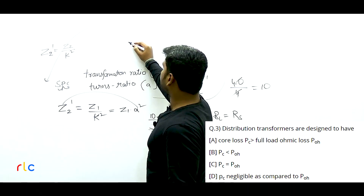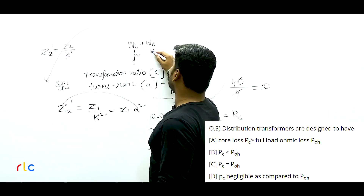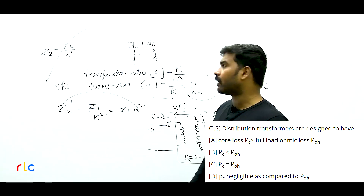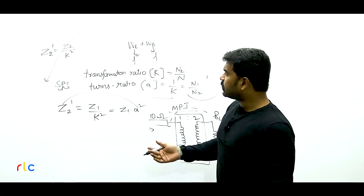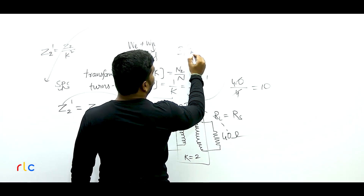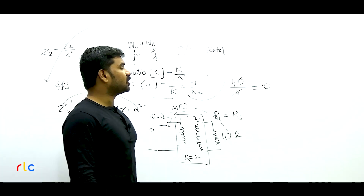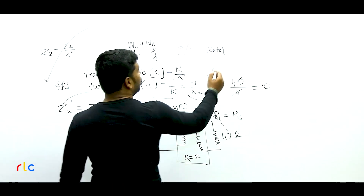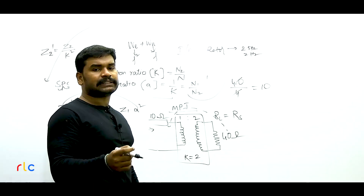If IC creates core losses (heating), it must be in-phase with voltage — just like resistive current. A resistor is the only component that creates heating losses. So IC must be in phase with the supply voltage. If voltage is at 0 degrees, IC is also at 0 degrees. For IM, it is the magnetizing current used to create magnetic flux — inductors create magnetic flux. The current in an inductor lags by 90 degrees, so IM lags voltage by 90 degrees.